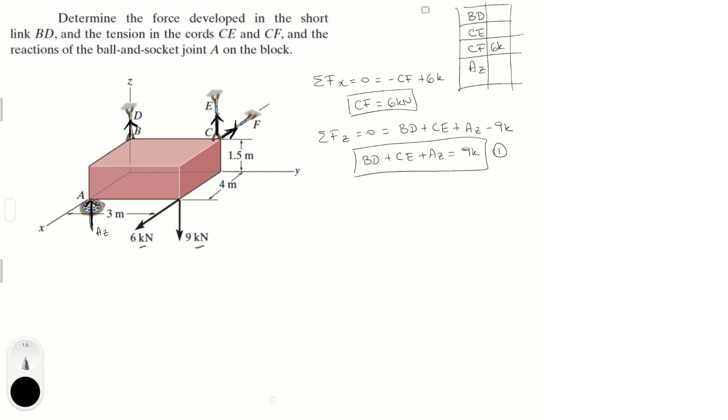Now let's do the moments. Assuming counterclockwise is positive, sum of the moments on the Y is equal to zero. In the Y, the forces creating a moment are CF, AZ, and the 9 kN force. The BD force is not creating a moment because it's coming straight out of Y. Same thing goes for CE, it's coming straight out of Y so it's not creating a moment. And the 6 kN force is also not creating a moment because it's coming straight out of Y. The other forces are though.